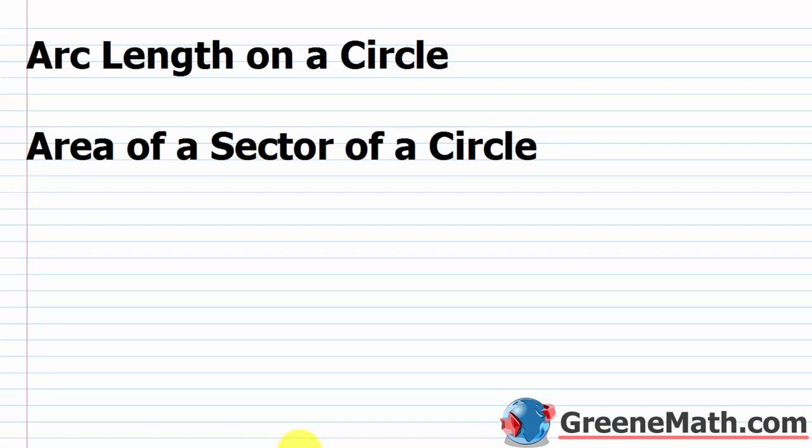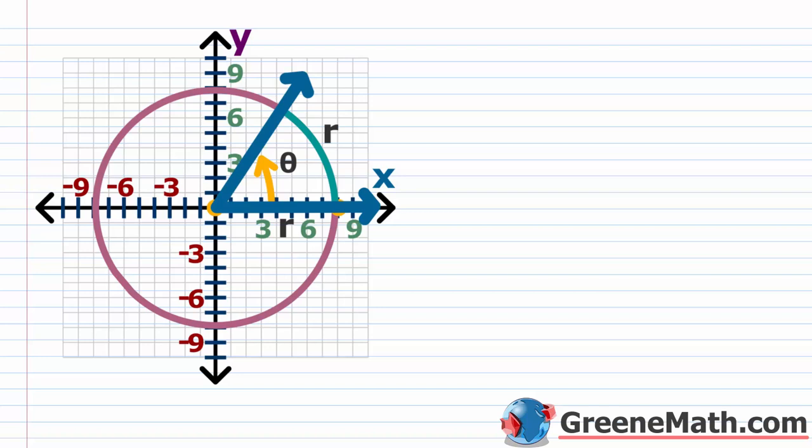In this lesson we want to talk about how to find the arc length on a circle, and also we'll look at how to find the area of a sector of a circle. In the last lesson we learned how to measure our angles using radians instead of degrees, and now we're going to take that formula and develop a formula for finding the arc length on a circle.